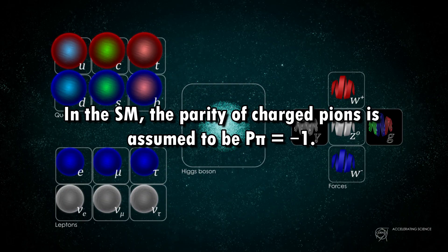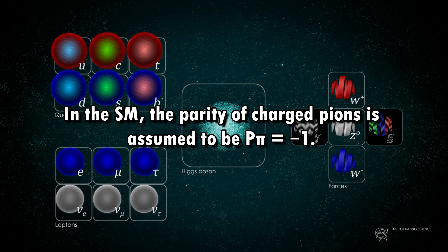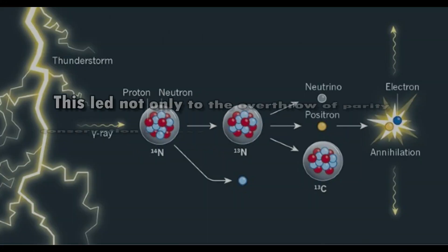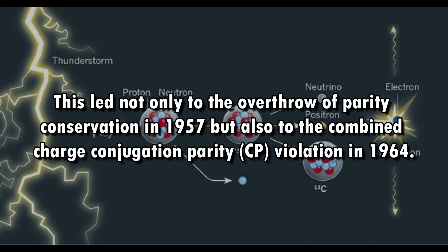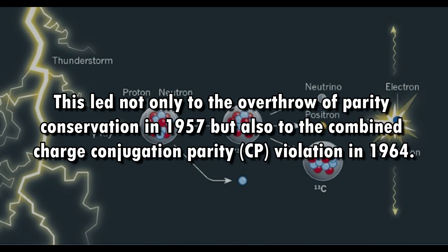In the Standard Model, the parity of charged pions is assumed to be P-pi equal to 1. This led not only to the overthrow of parity conservation in 1957, but also to the combined charge conjugation parity (CP) violation in 1964.